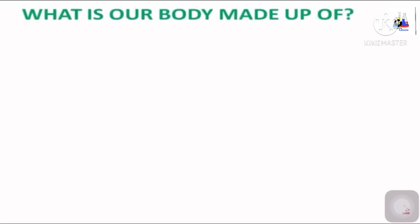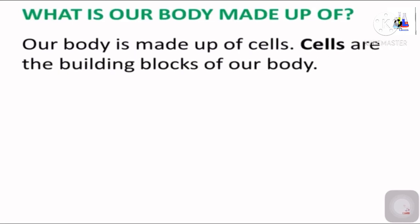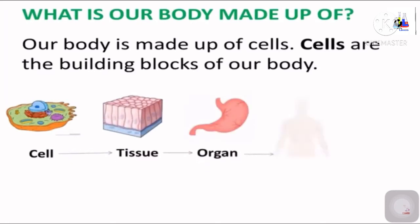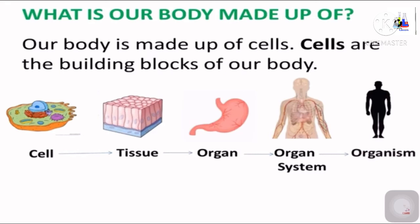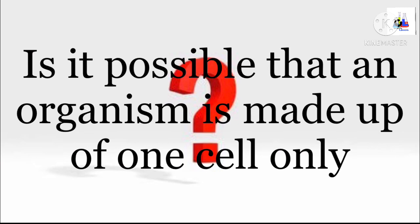Let's revise again. Our body is made up of cells. Cells are the building blocks and the smallest functional unit of our body. When many cells join together, they form tissue. Many tissues join together to form an organ, which further joins to form an organ system, and then many organ systems join together to form an organism.